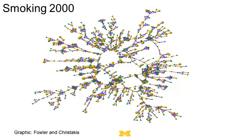Now if you look at smoking, you see a similar thing. Here's smoking in 2000 — the yellow dots are the people who smoke, and they tend to be out near the fringe of the social network. You see big clusters of people who don't smoke. Looking at this snapshot, you could convince yourself this is evidence of peer effects in smoking.